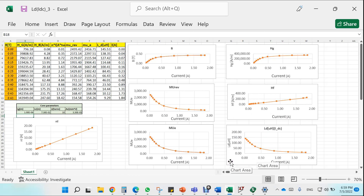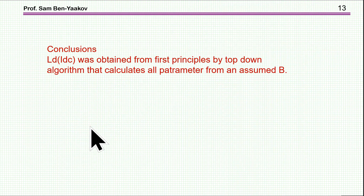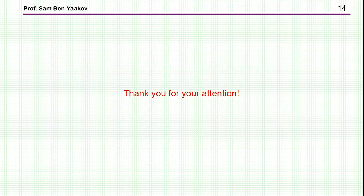In this video, we presented a method in which, starting from first principles, we can calculate L sub D — the incremental inductance of a DC-biased inductor — using a top-down algorithm that calculates all parameters from an assumed B. Starting with B, we calculate everything else and obtain the relationship between current and all other parameters. I thank you very much for your attention and hope you found this video of interest and perhaps useful in the future. Thank you very much.